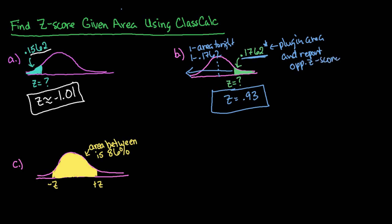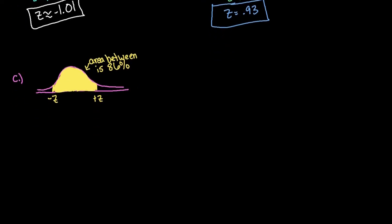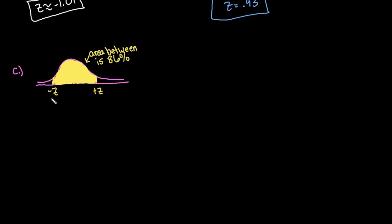Alright. And then the last one that we have is what do we do when we have the area between? Whenever we're dealing with the area is in between, you do want to make sure that you have the same z-score, just opposite signs, so it's always going to be centered. And so what we're trying to do is we want to find this area to the left of the negative z-score. And to do that, it's going to be one-half of one minus the area between.